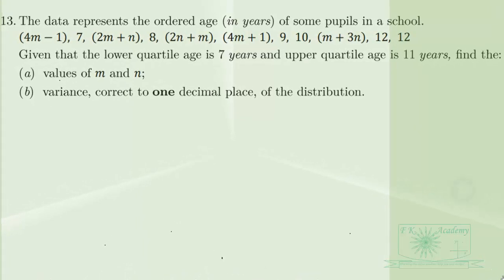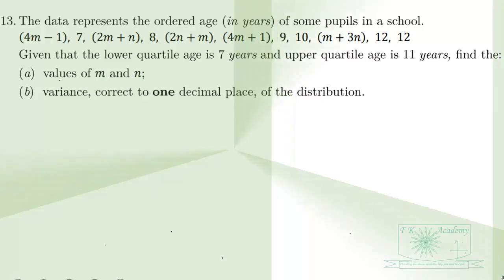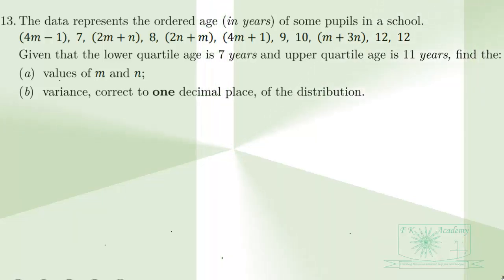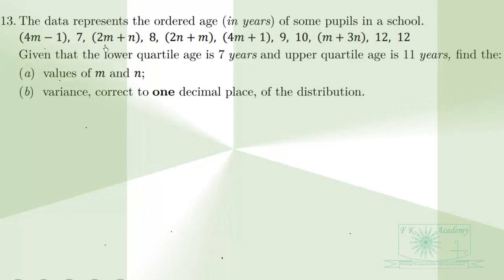We are still solving the 2024 elective mathematics paper 2, statistics and probability section, question number 13. The data represents the ordered age in years of some pupils in a school. Given that the lower quartile age is 7 years and upper quartile age is 11 years, find the values of M and N.